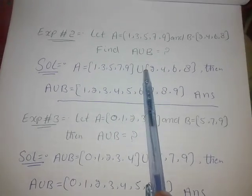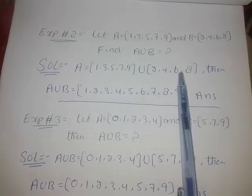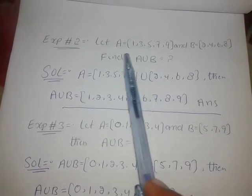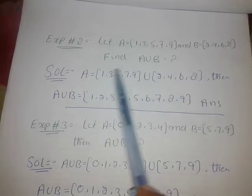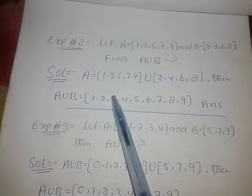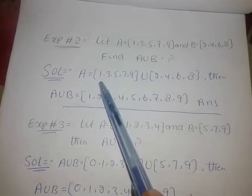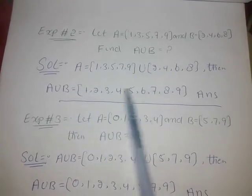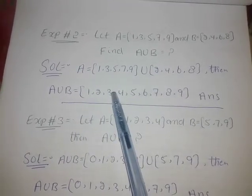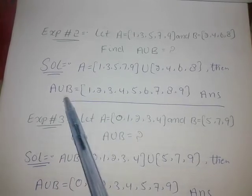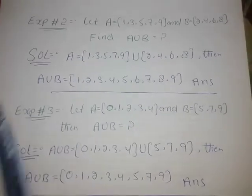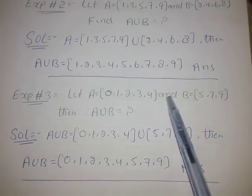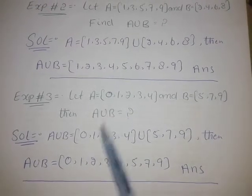The union of A and B combines the total elements of both sets. For example number three, let A be equal to {0, 1, 2, 3, 4} and B be equal to {5, 7, 9}. Find A union B.